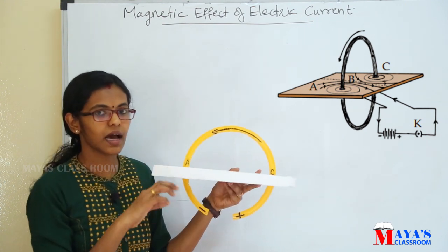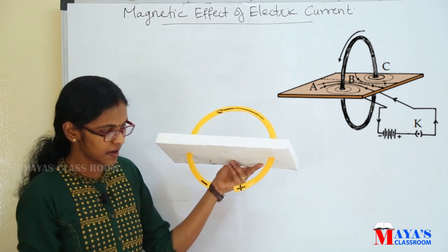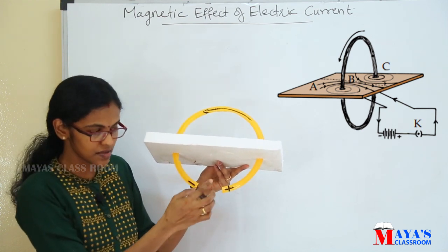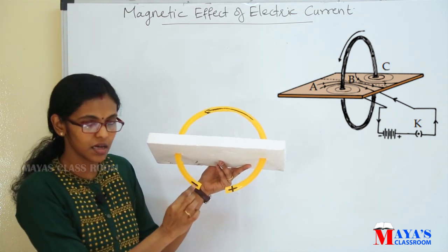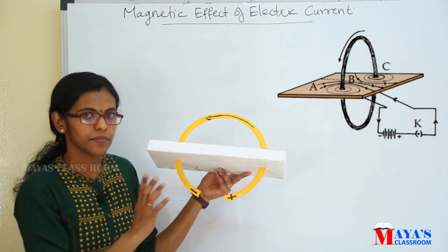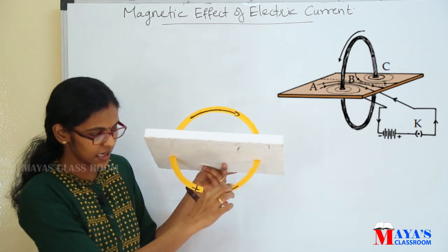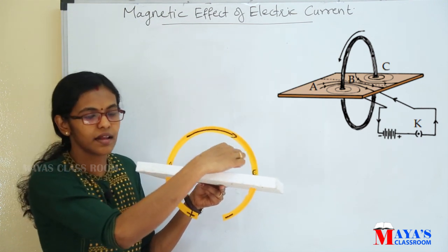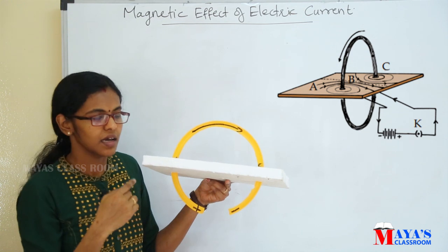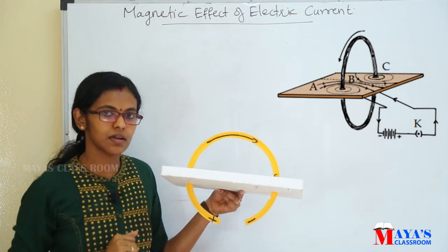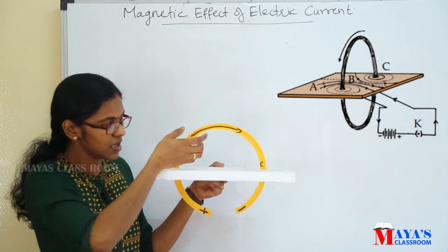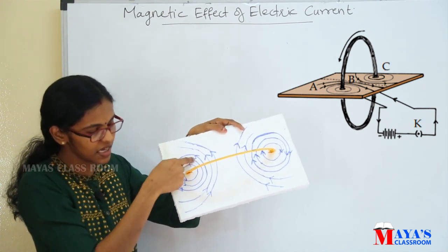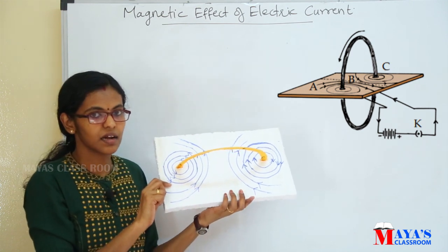If we have a current reversed — if it is positive and negative — and we reverse the current, it becomes negative where it was positive. If we change the current, it is now in the direction from A to C. Using the right-hand thumb rule, the magnetic field is in the anti-clockwise direction. It is clear.